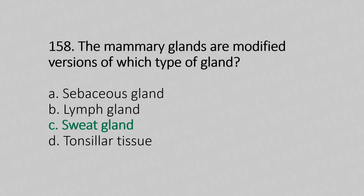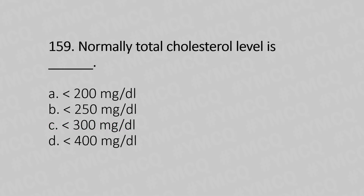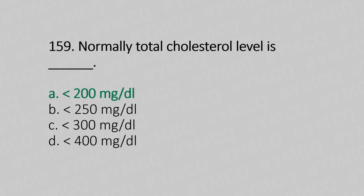Now let's move to question number 159. Normally, total cholesterol level is — Option A: less than 200 mg per deciliter. Option B: less than 250 mg per deciliter. Option C: less than 300 mg per deciliter. Option D: 400 mg per deciliter. And the answer is Option A: less than 200 mg per deciliter.